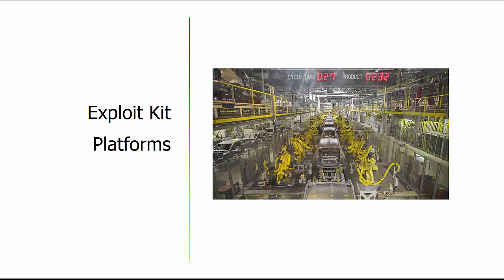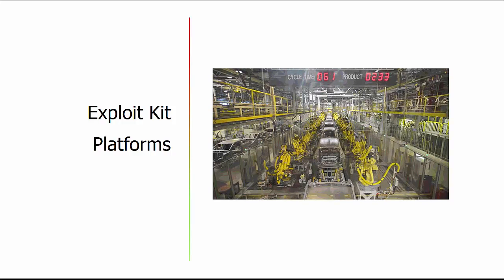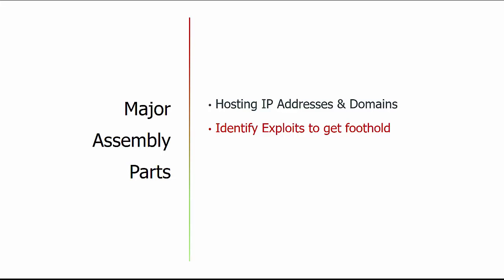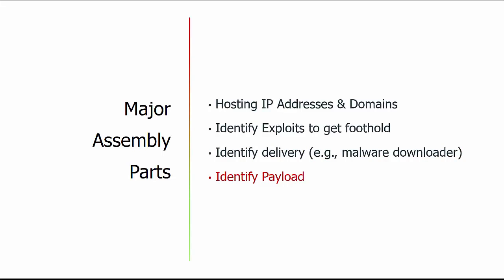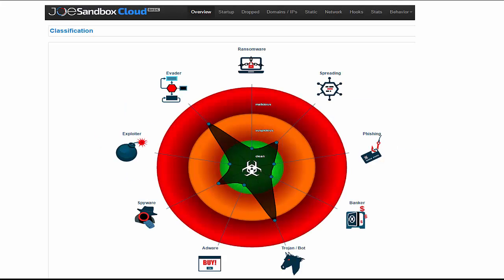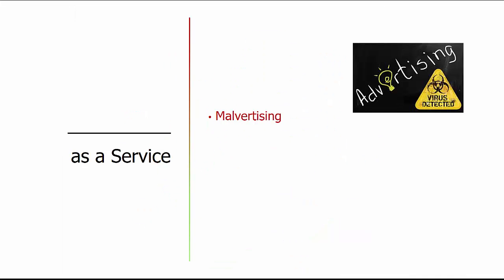Exploit kit platforms themselves are very sophisticated. They have full development teams working on the different components. The major assembly parts include hosting IP addresses and domains, identifying particular exploits to go after, identifying the delivery mechanism, and the payload itself. This is a very componentized business where parts of the exploit kit are actually done by third parties. For example, you can have malvertising as a service — these service providers do nothing but ensure that traffic comes to your gate or exploit kit.